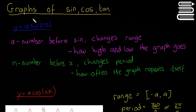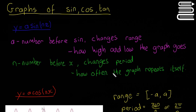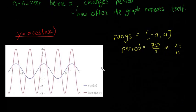This is going to be our last video on the topic of graphs of sine, cos and tan. I'm going to do a quick revision of the last video. If we have y equals a·sine(n·x), where a and n are both numbers, 'a' — the number before the sine — changes the range of the graph, basically how high and low it goes. 'n' — the number before the x — changes the period of the graph, or how often it repeats itself.